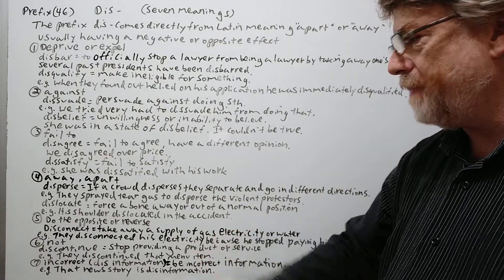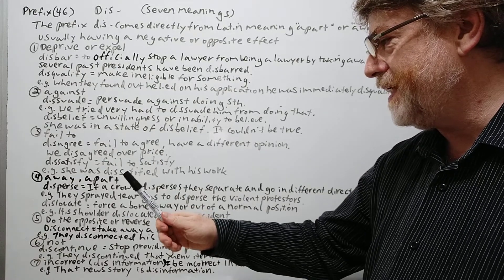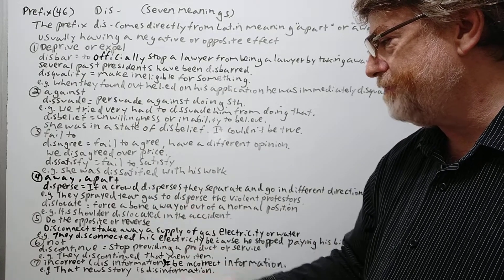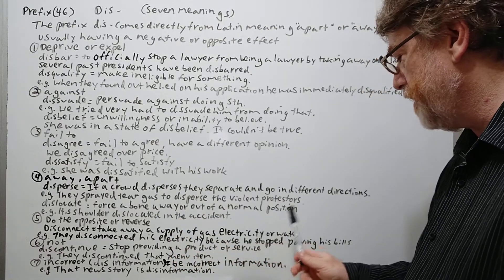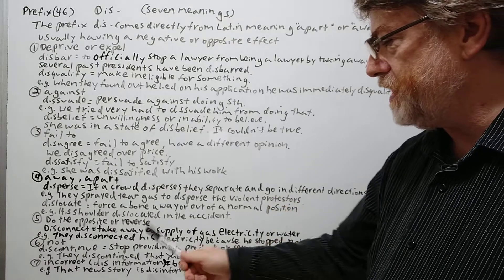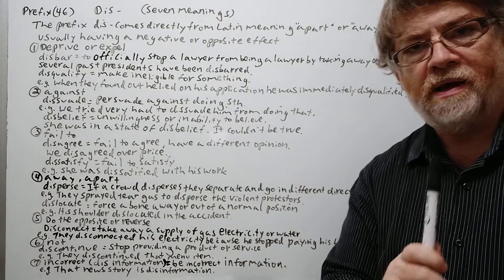Number five here: do the opposite or reverse. So our example here is disconnect. To take away a supply of gas, electricity, or water from something. The example is they disconnected his electricity because he stopped paying his bills.